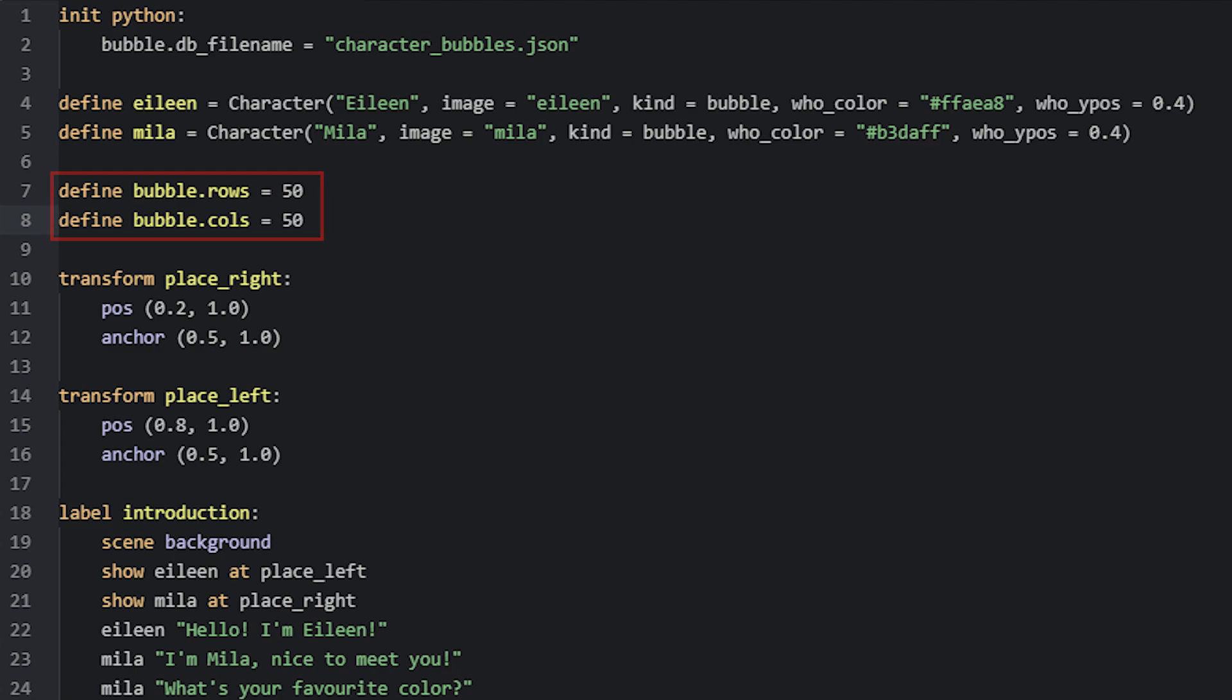By default, according to the documentation, they are set to 24 rows and 24 columns. For this example, I'll try setting them to 50 rows and 50 columns instead, and see how it looks in the game.